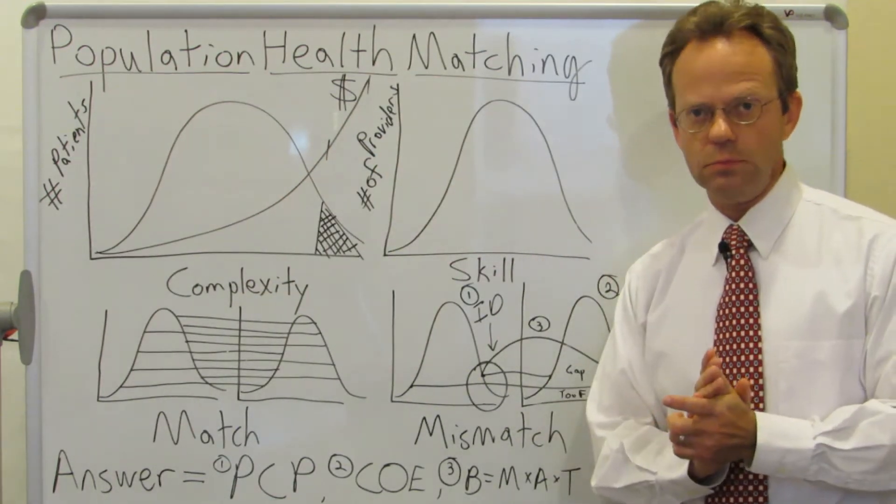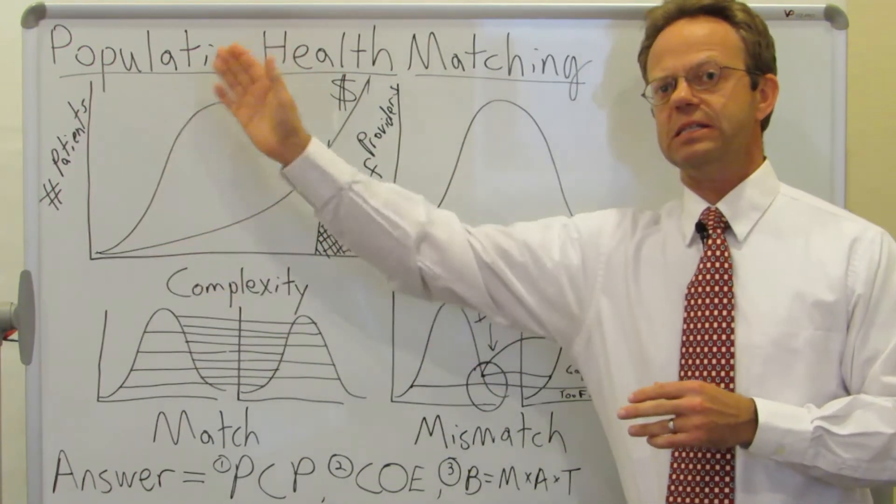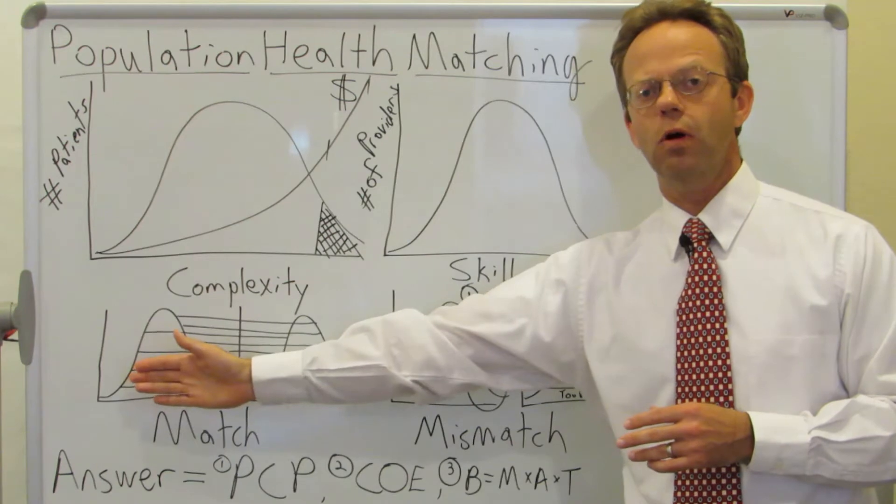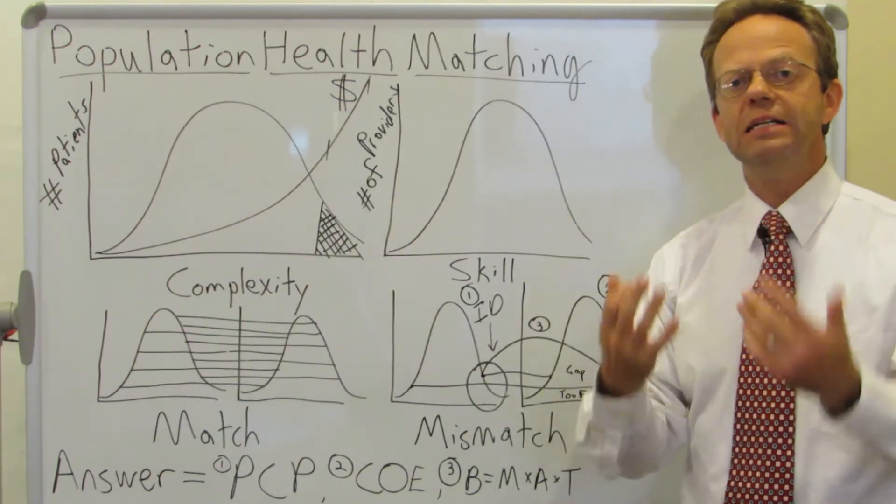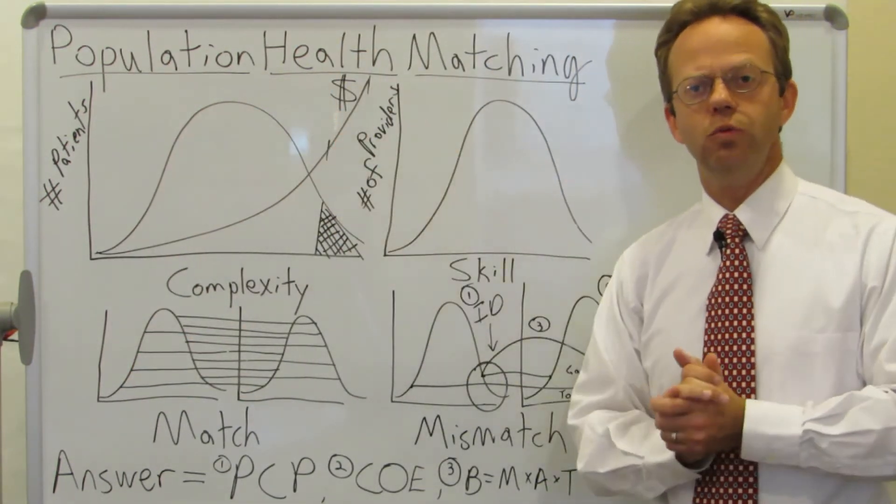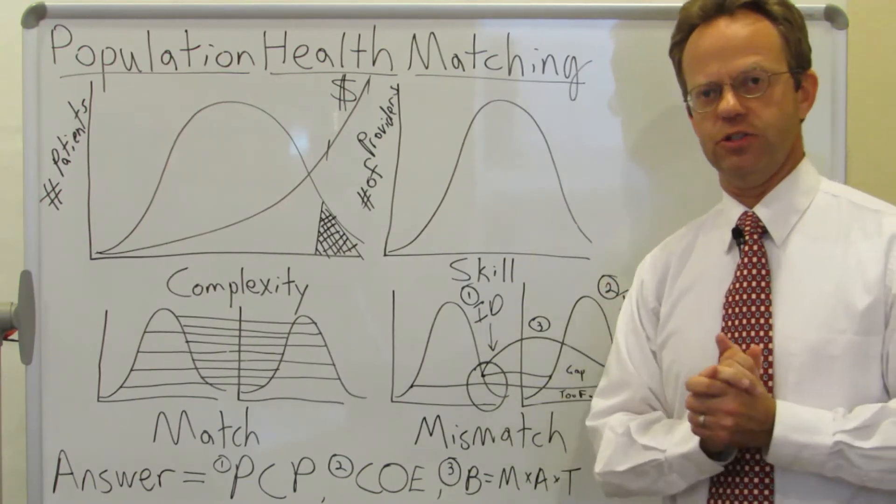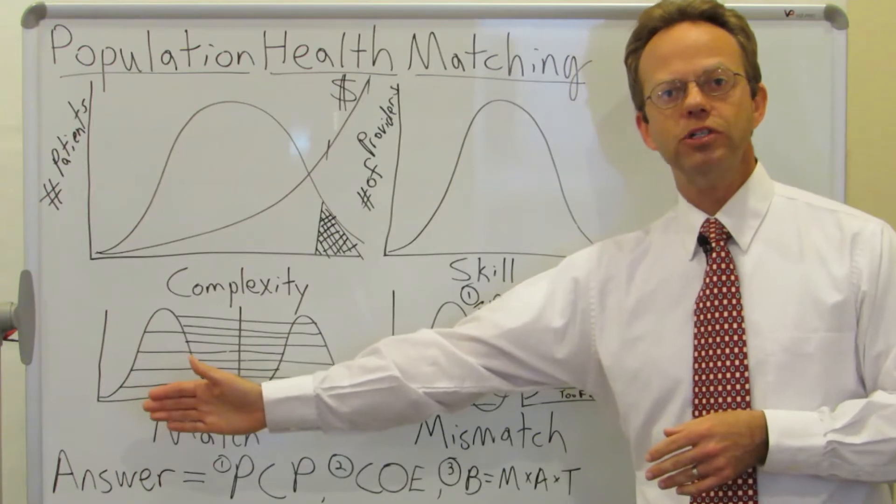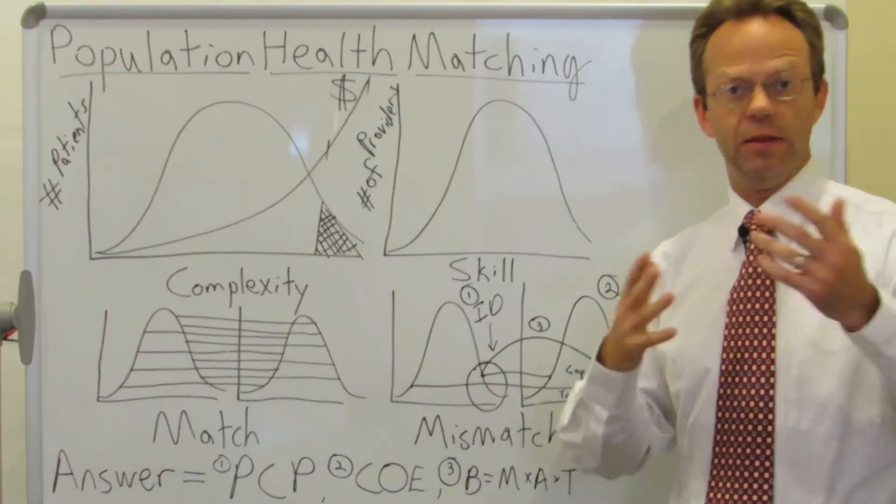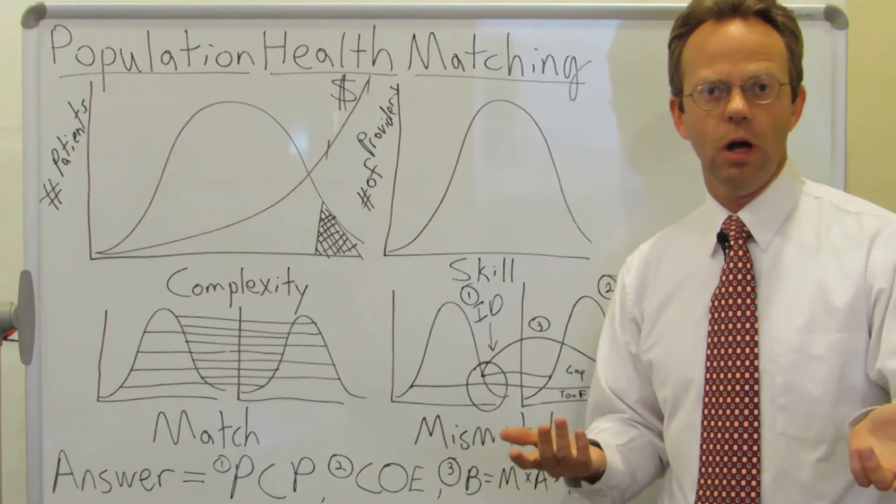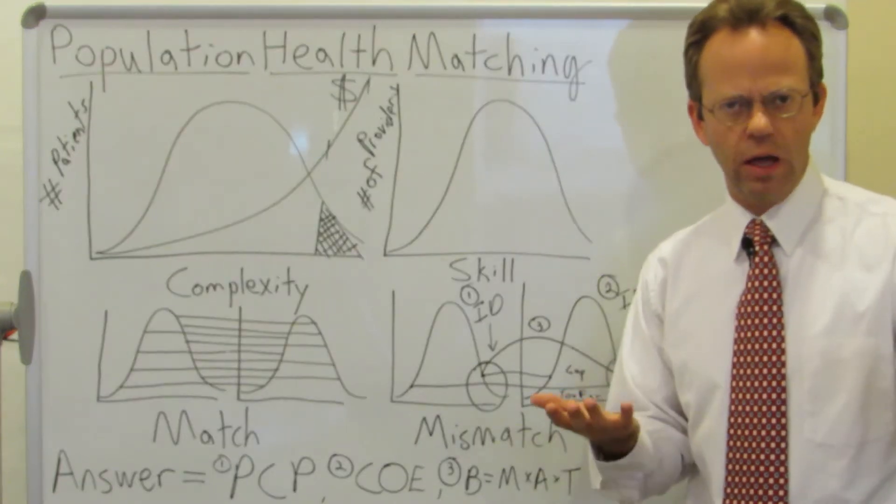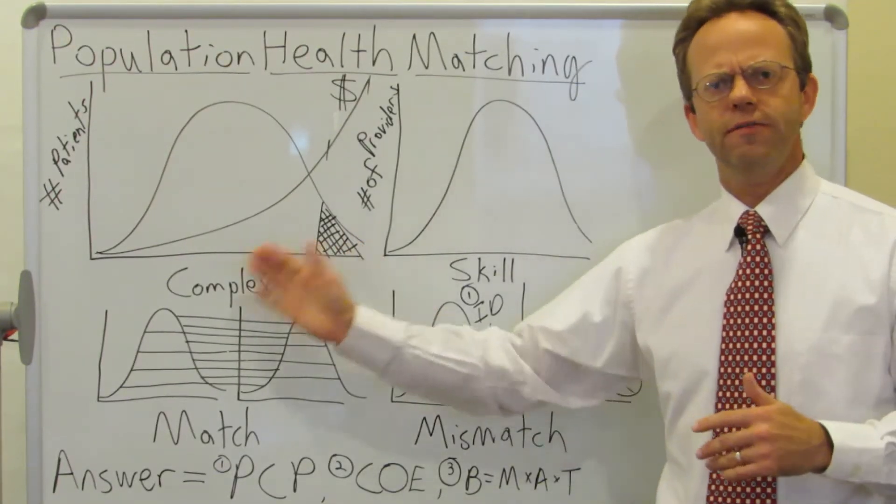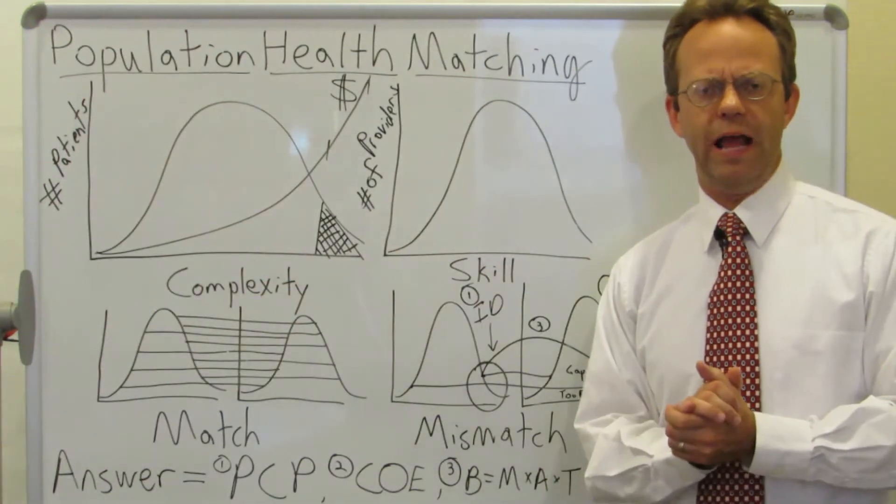Now, what I've done here is I've basically taken these two charts and I've put them into smaller form to show that in an ideal world for population health, what you want is essentially a matching exercise where you have the least complex patients that are going to the physicians and the facilities that have lower skill sets. And that's totally fine, right? Because you don't need overkill for, you know, let's say, a flu shot or what have you.